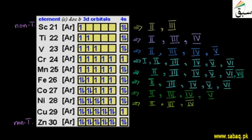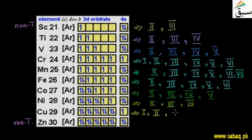After nickel, we will talk about copper. In copper, there will be one electron lost, so it shows oxidation state +1. Copper also shows oxidation state +2, and this also shows +3. But we will see that +1 and +2 are the common oxidation states for copper, while +3 is not common.